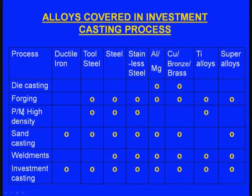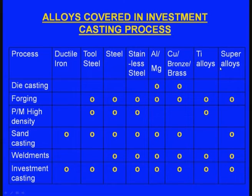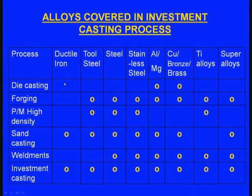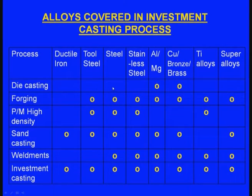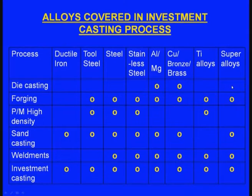Looking at die casting: ductile iron cannot be cast, tool steel cannot be cast, steel and stainless steel cannot be cast. Only aluminum, magnesium, copper, brass and bronze alloys can be cast using die casting. Titanium alloys and super alloys also cannot be cast using die casting.